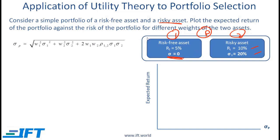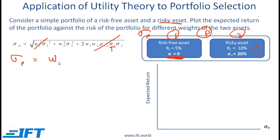For portfolio risk, we use the standard portfolio risk formula. Since sigma of the risk-free asset is 0, and the correlation of any asset with the risk-free asset is also 0, the expression simplifies greatly. The risk of the portfolio is simply w2 times sigma 2, where w2 is the weight in the risky asset. And the expected return of the portfolio is the weighted average of the two assets' returns.